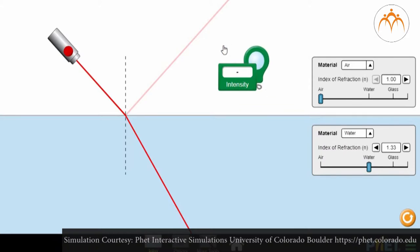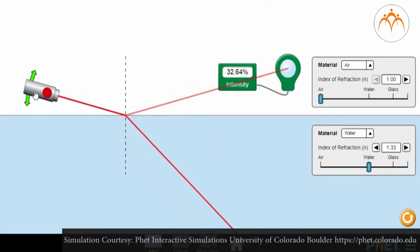We can find out the percentage of reflection with this meter. 5% of light is reflected back while 95% of it is refracted. As we change the angle of incidence for light, the amount of light reflected changes.